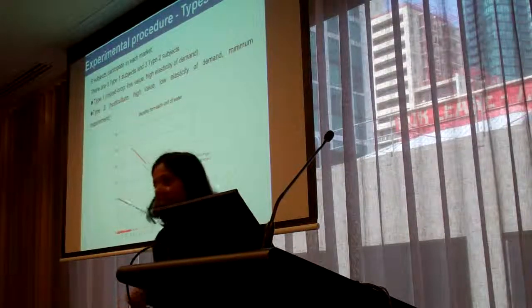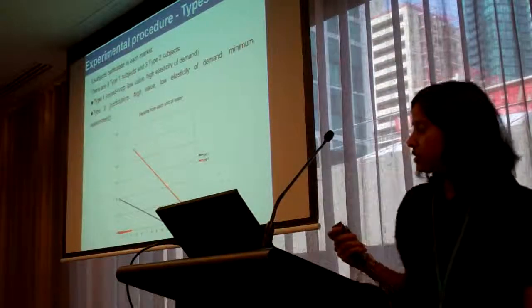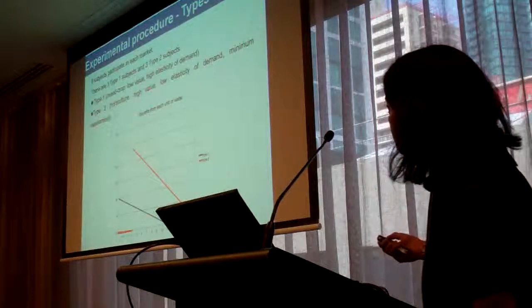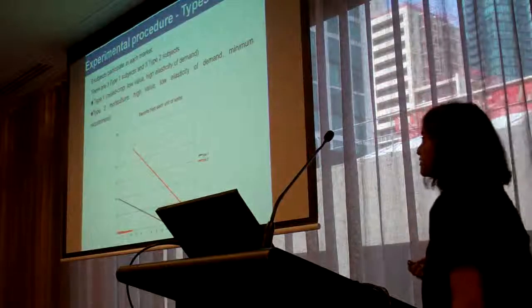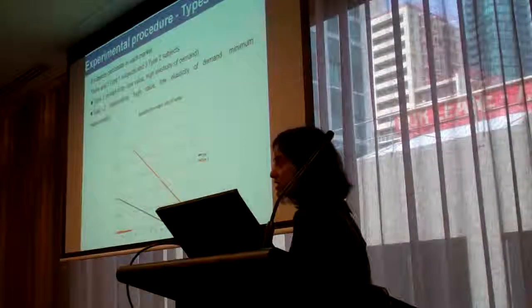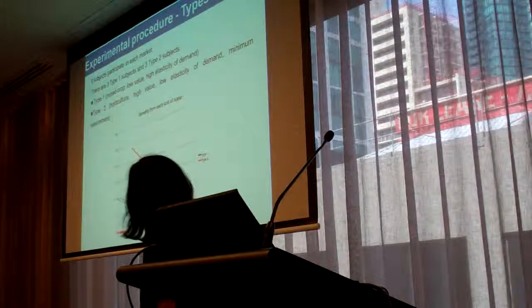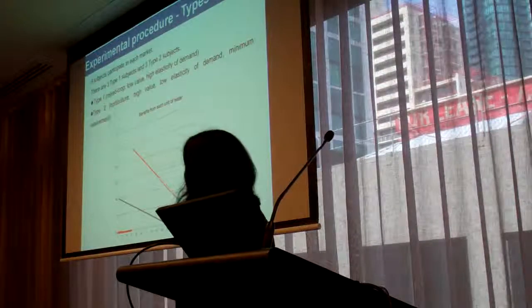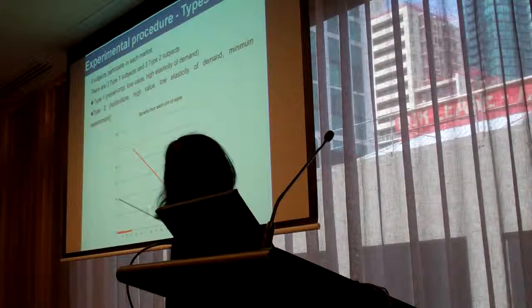I won't have much time for the details of the experiment, but let me just tell you a few things which I think are important. In our experiment, we have six subjects participating in each market. You can think of these six subjects as six farmers, and we have two types of farmers. We have type 1, who perhaps grows a mixed crop, who has a low value for water and high elasticity of demand for water.